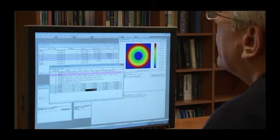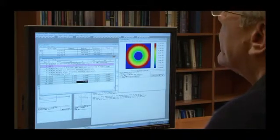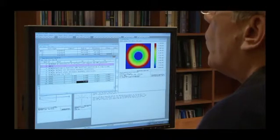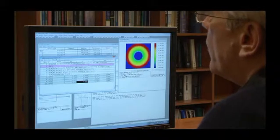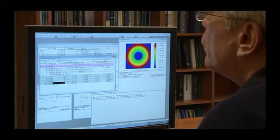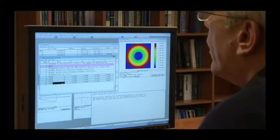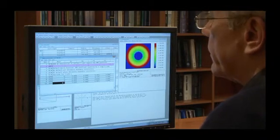However, the merit function here still shows the previous 0.0022 of a wave, because up until now, Gaussian quadrature has not accounted for obscured pupils like this.